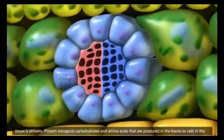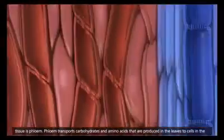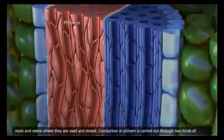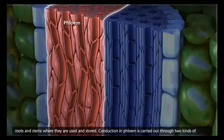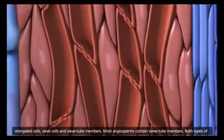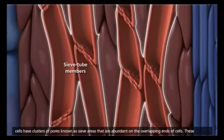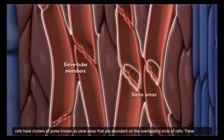The other main vascular tissue is phloem. Phloem transports carbohydrates and amino acids that are produced in the leaves to cells in the roots and stems where they are used and stored. Conduction in phloem is carried out through two kinds of elongated cells, sieve cells and sieve tube members. Most angiosperms contain sieve tube members. Both types of cells have clusters of pores known as sieve areas that are abundant on the overlapping ends of cells.